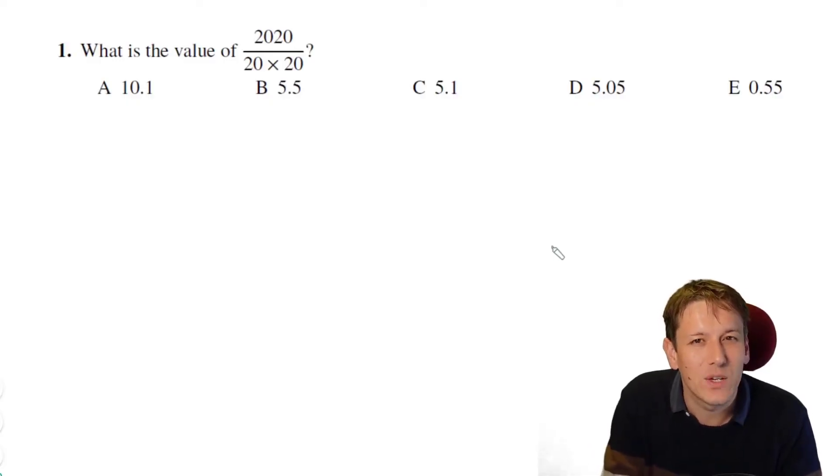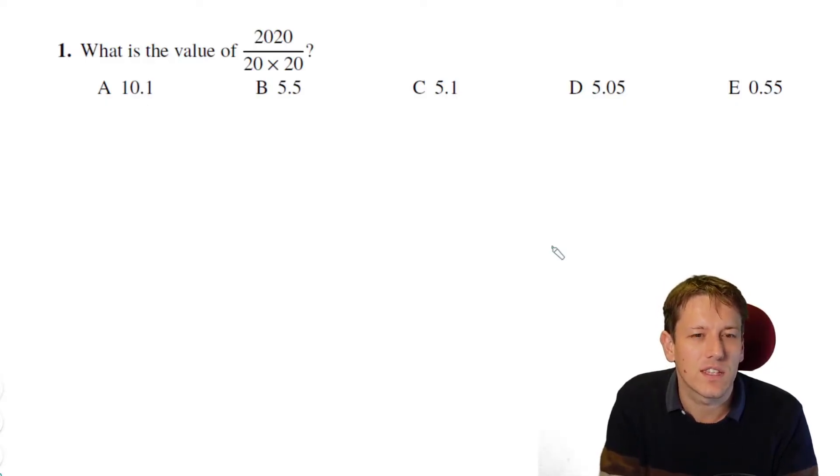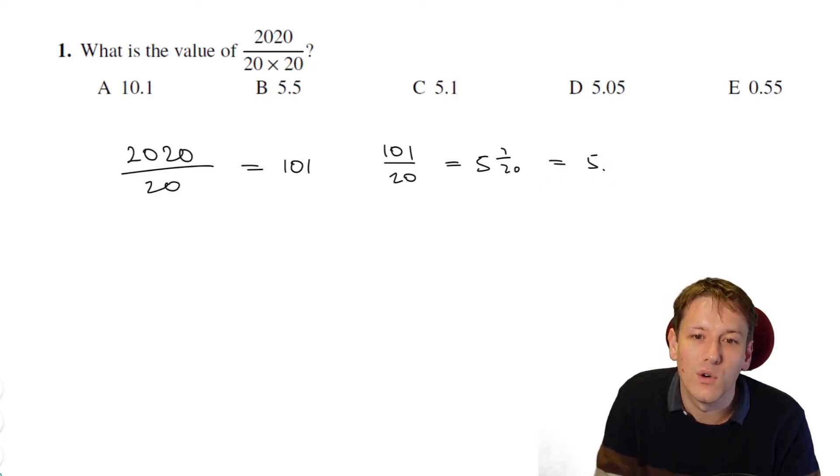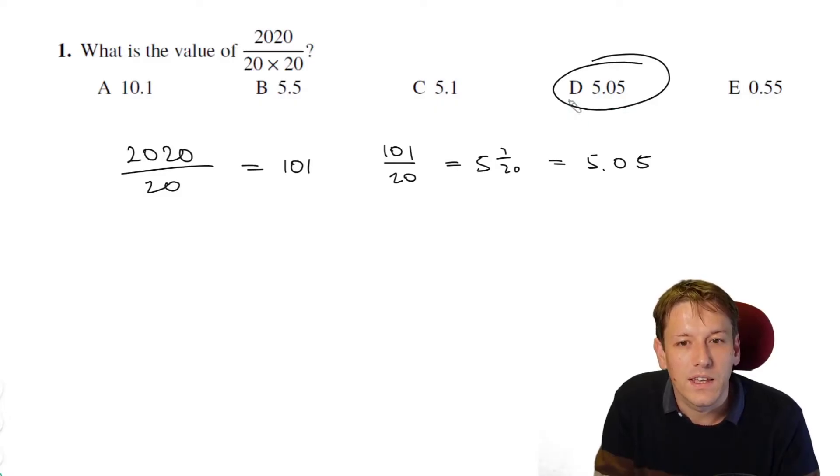In question 1, we want to work out the value of 2020 divided by 20 times 20. I always try to get the current year in the paper somewhere in these challenges. My first instinct here is to think of this as 2020 divided by 20, and then divided by 20 again. So 2020 divided by 20 gives us 101, and then 101 divided by 20, well that's 5 and 1/20th, or 5.05, and we can just get to the answer straight away like that.